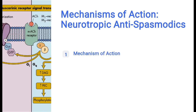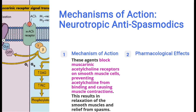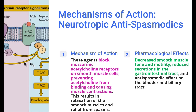Now we'll understand the mechanism of action of neurotropic antispasmodics — how do they work? As you can see in the diagram, the muscarinic acetylcholine receptor is present, and there is a small molecule called ACh, that is acetylcholine. Acetylcholine binds to its receptor and causes muscle contractions. Our neurotropic antispasmodic agent blocks this binding, which leads to relaxation in smooth muscles and provides relief from spasms. The pharmacological effects include decreased smooth muscle tone and motility, reduced secretion in the gastrointestinal tract, and antispasmodic effects on the bladder and biliary tract.